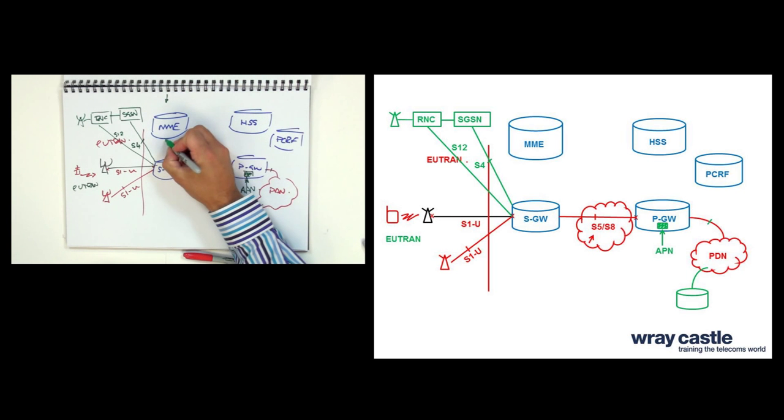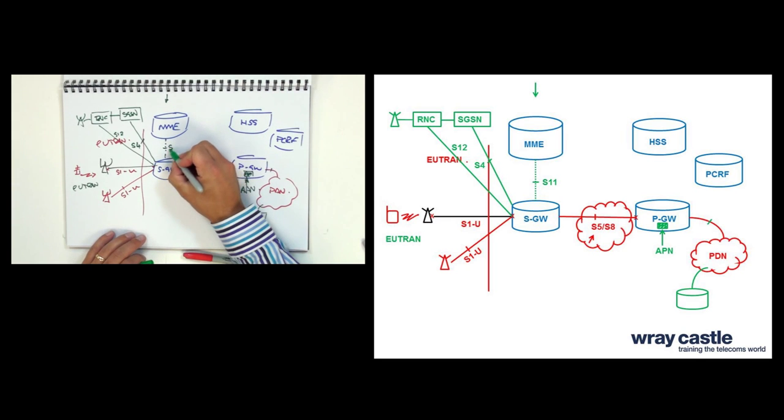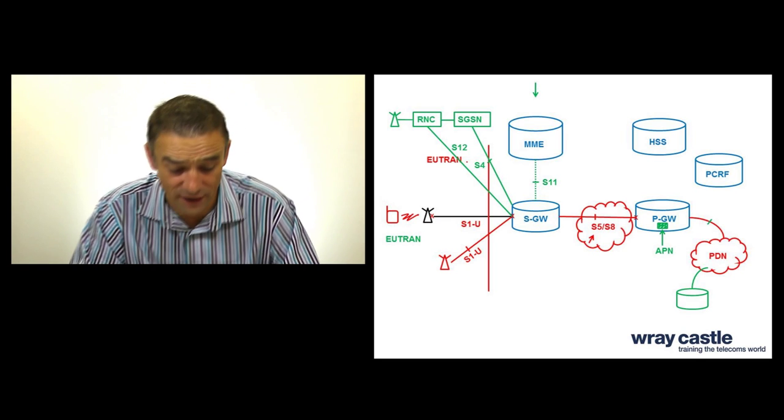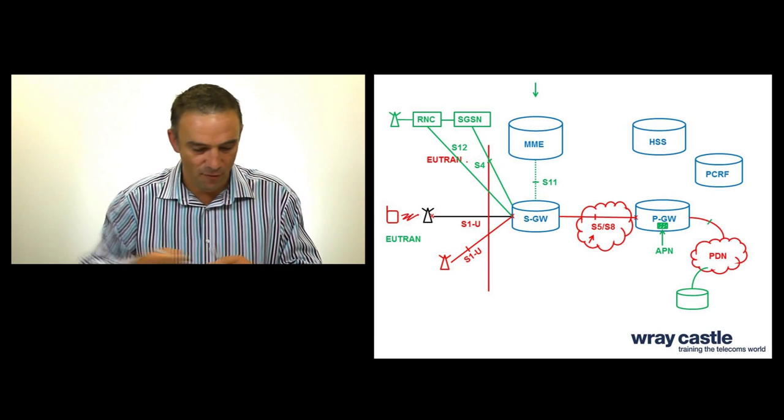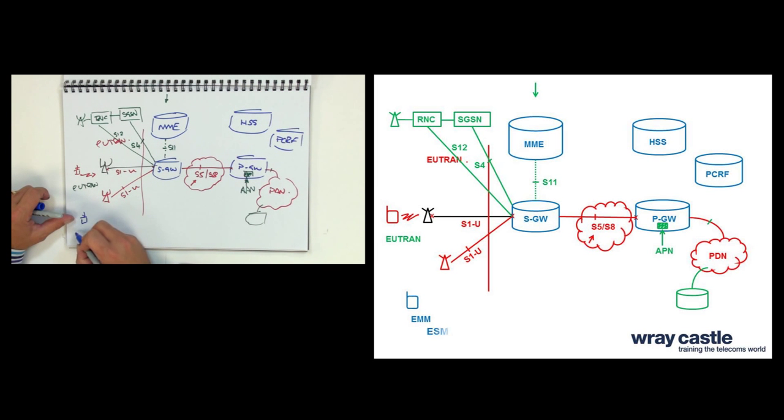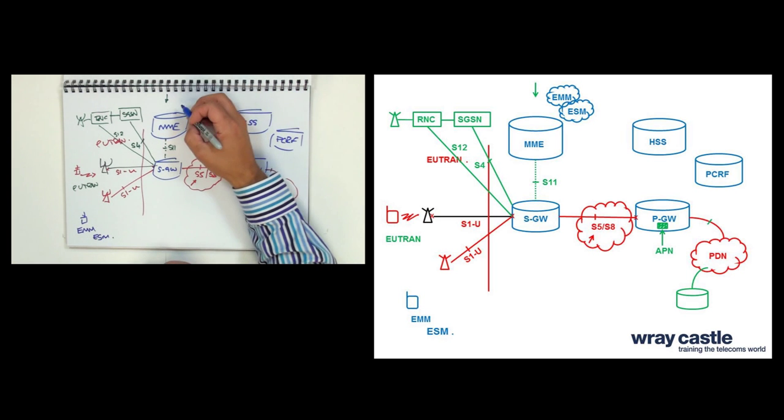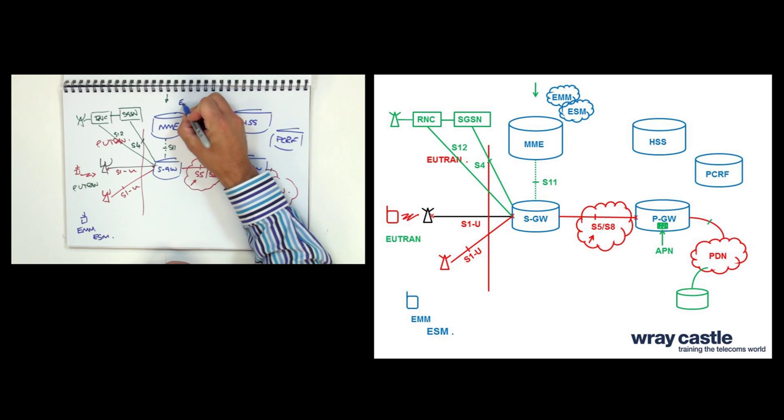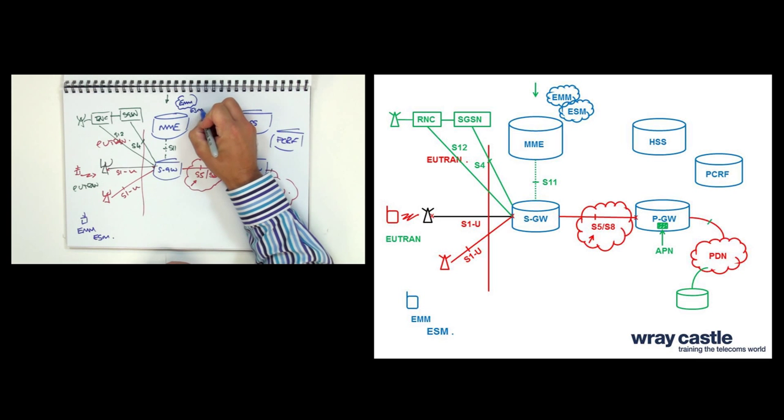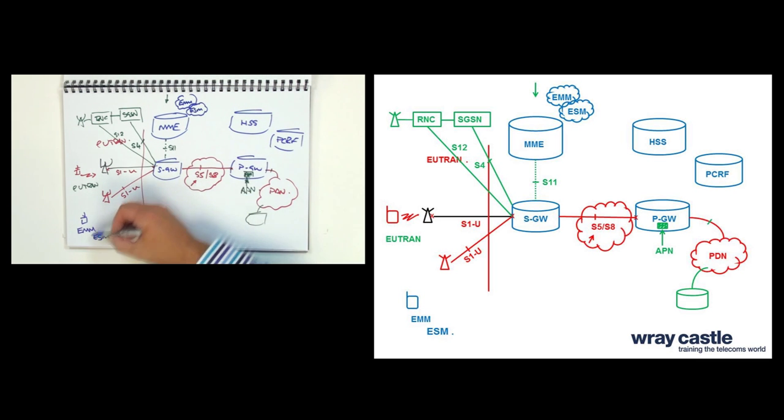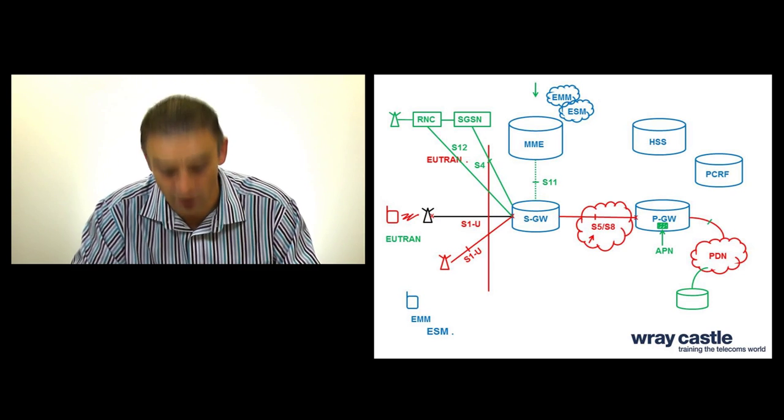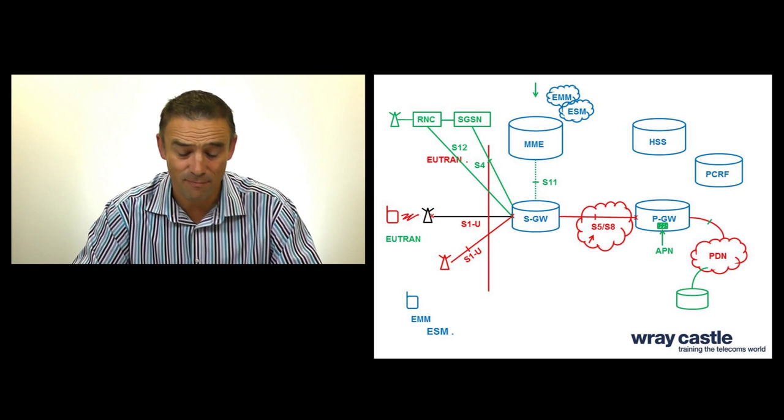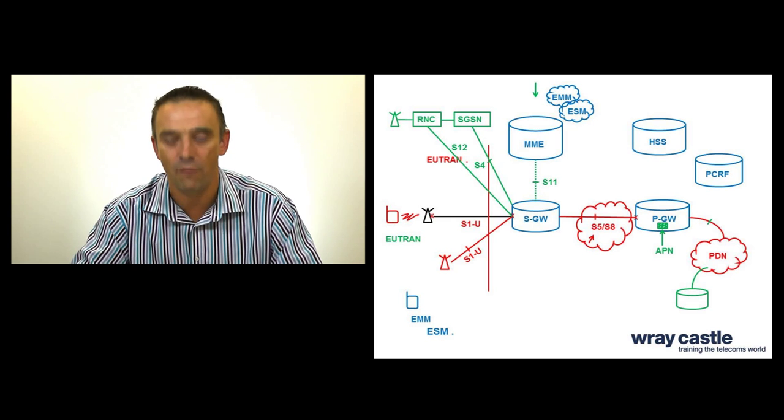Now the next node we have here is a mobility management entity, and the mobility management entity will connect to serving gateways via the S11 interface. And really the main drive of this mobility management entity is to support NAS signalling. So inside the mobility management entity, we've got EMM, Enhanced Mobility Management, and ESM, Enhanced Session Management. So UEs will initially register onto a mobility management entity. The mobility management entity is going to deal with authentication and security. And once that's done, the mobility management entity is now going to use session management to drive the creation of bearers.